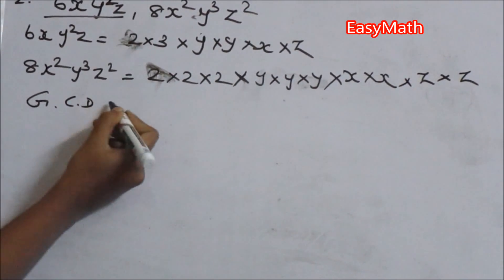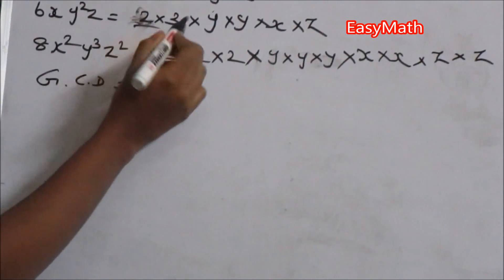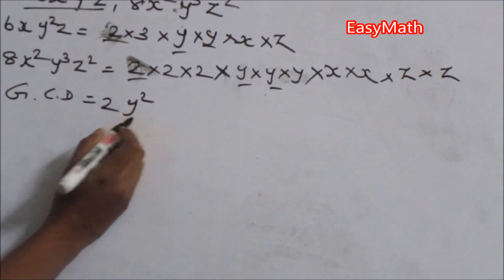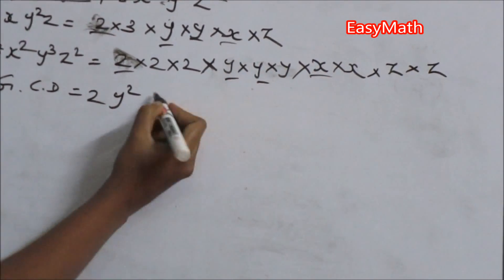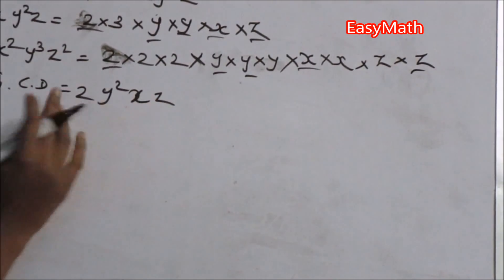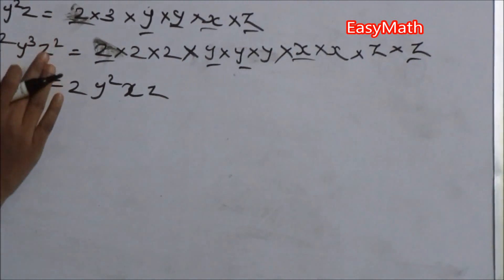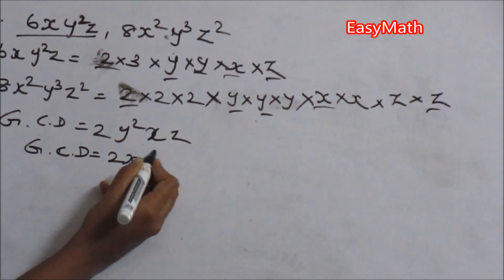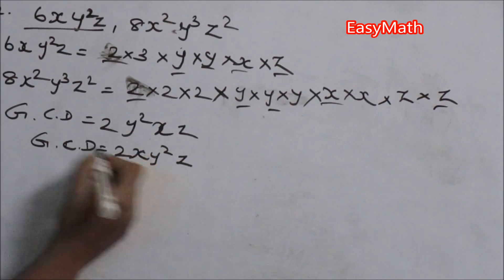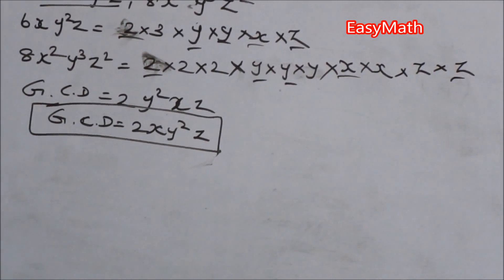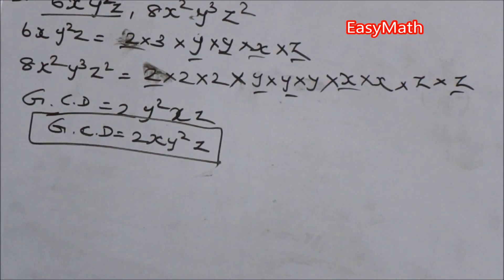The common number is 2, the common variables are x, y × y (which is y²), and z. So the GCD of this polynomial is 2xy²z.